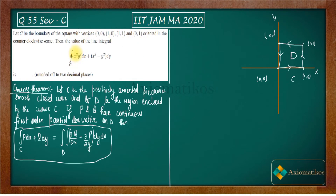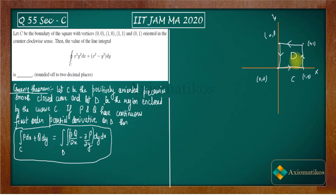In our case, we have smooth functions x²y² and x² − y², which are your P and Q respectively, so there is no issue with differentiability. There is also no problem with the orientation — the boundary of the square is positively oriented and closed. It is piecewise smooth: from each vertex to the next it is smooth, satisfying every hypothesis of Green's theorem.